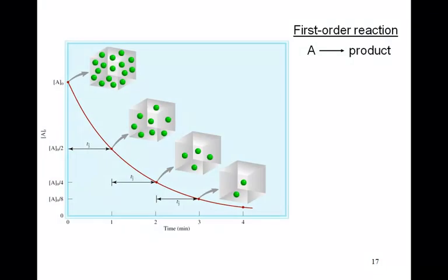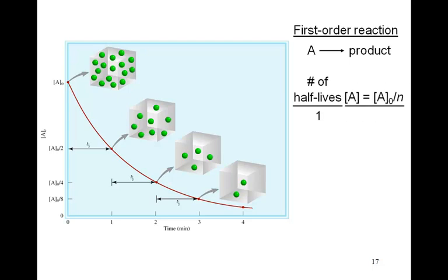First-order reactions follow an exponential function. In terms of number of half-lives: after one half-life, A equals A₀ divided by 2; after two half-lives, A₀ divided by 4; after three, A₀ divided by 8; and after four, A₀ divided by 16. Those are the concentrations at each successive half-life.